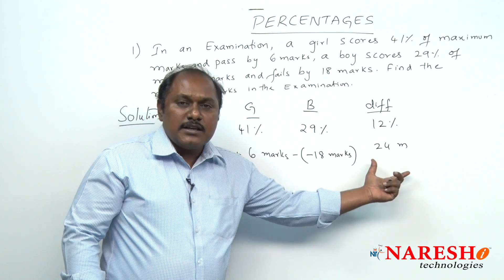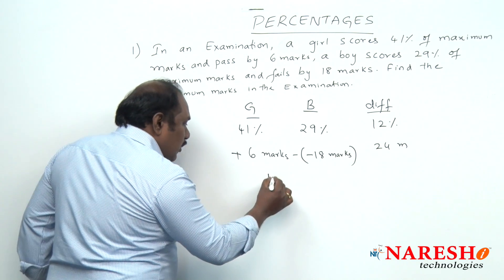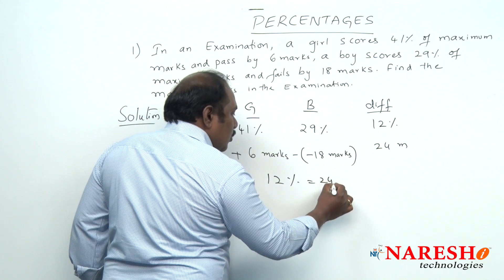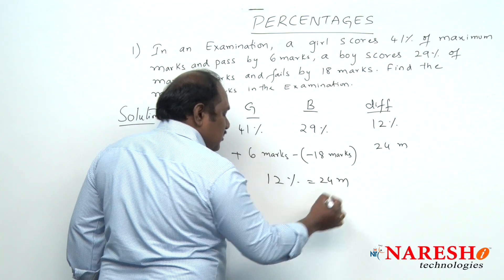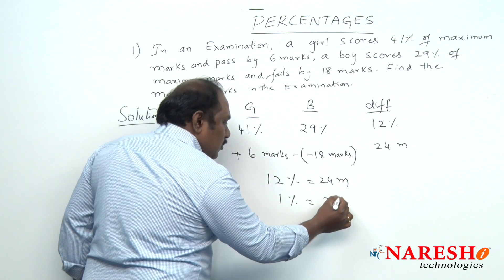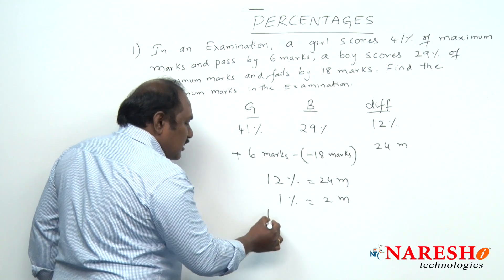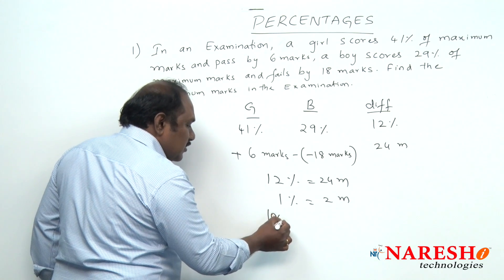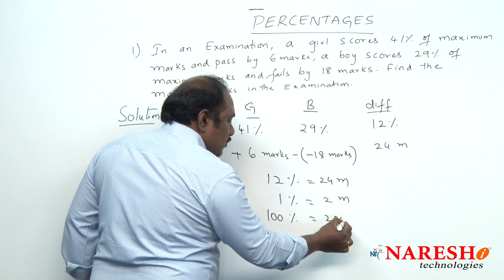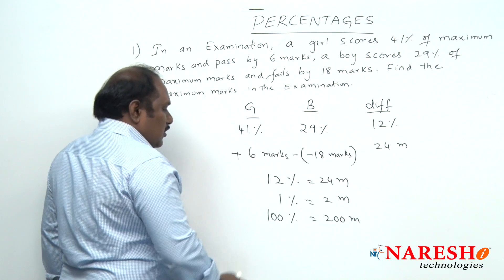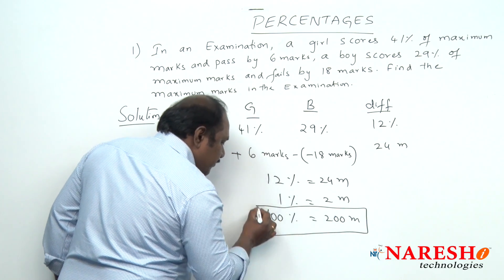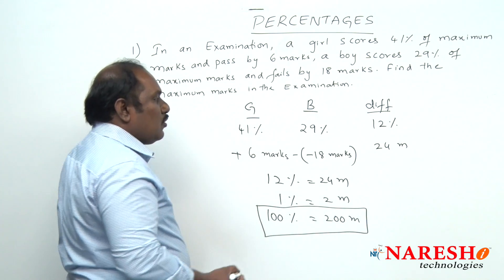The difference with respect to marks is 24. So 12% should be equal to 24 marks, and 1% will be equal to 2 marks. So what is 100%? 100% will be equal to 200 marks. So the maximum marks in the examination is 200.